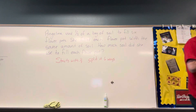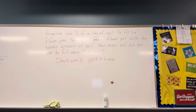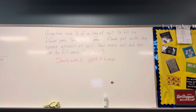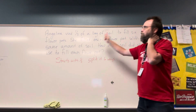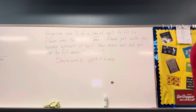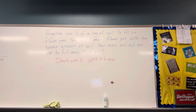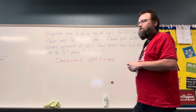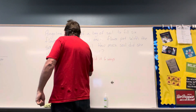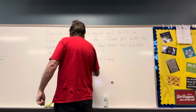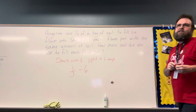So if I were going to ask you to tell me the equation, Rebecca, what would be the equation for this problem? Six divided by one-third. Why are you dividing six? Are we dividing the flower pots or the bag of soil? So we're dividing one-third by six. One-third divided by six.